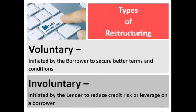Restructuring can be either voluntary or involuntary, determined by who initiates the process. If voluntary, it is initiated by the borrower to secure better terms and conditions. If involuntary, it is initiated by the lender to reduce credit risk or leverage on a borrower. A bank may have given you a loan and then realizes you have other businesses they want to bring in. Even though the bank initiated it, the borrower can negotiate — if you want me to bring in my other businesses, perhaps reduce the interest rates or change the tenure under the restructuring conditions.